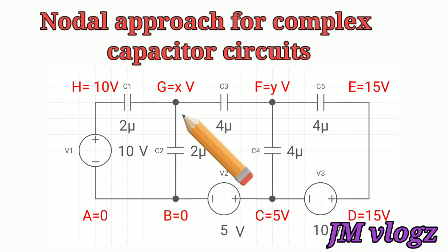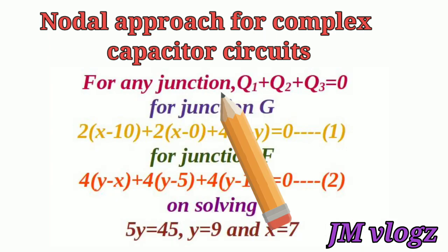For junction G, we do not know the actual value. Since there is a capacitor connected from H and another capacitor from B, we consider G as an unknown higher potential and mark it as X. Similarly, junction F is also an unknown potential and we mark it as Y. For any junction we can apply the law of conservation of charge.